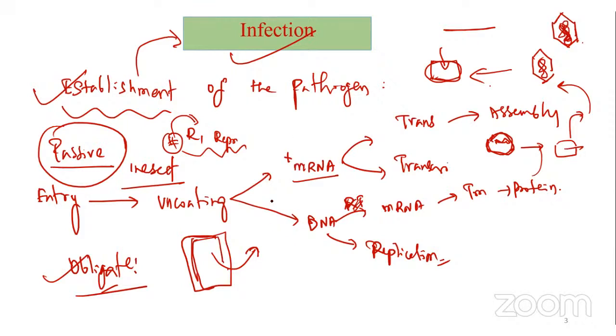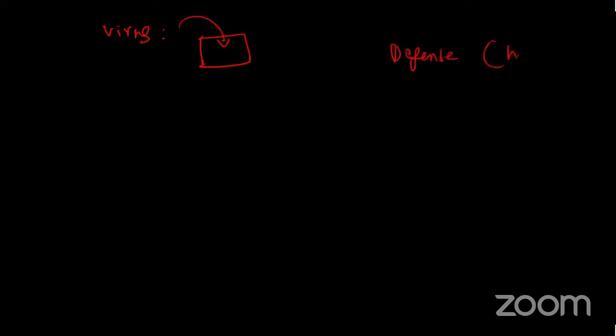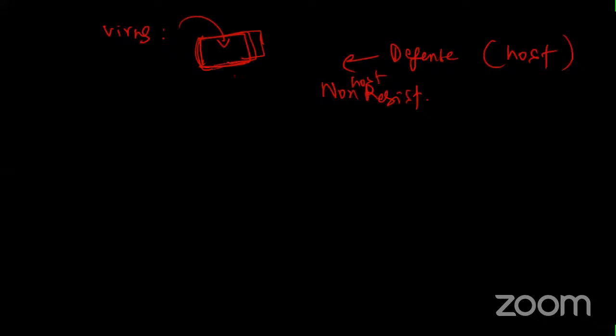Once the virus enters, plants also try to evade the pathogen through defense mechanisms. One is non-host resistance - a virus specific to a particular cultivar or host cannot infect a different host. For example, tungro virus can't infect wheat because wheat shows non-host resistance; the susceptibility factors required by tungro virus are absent in wheat.